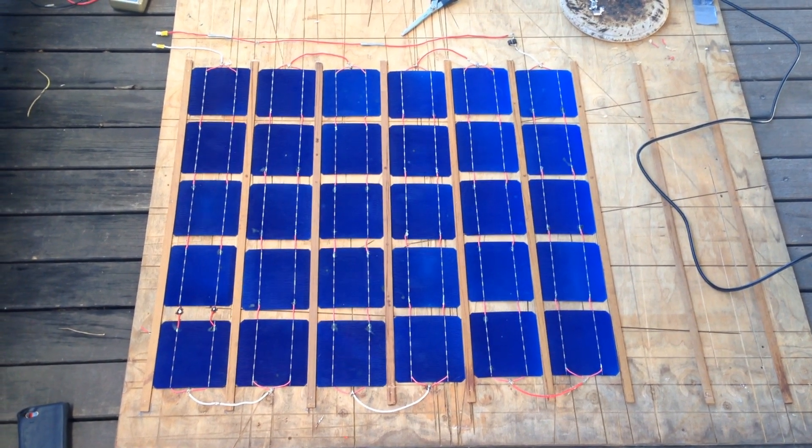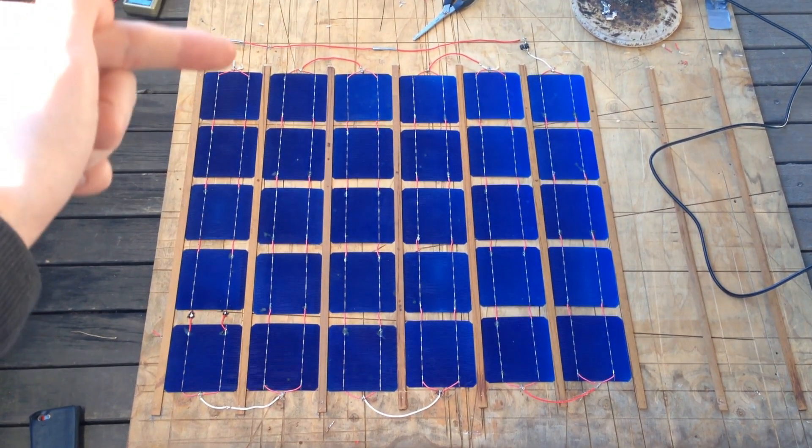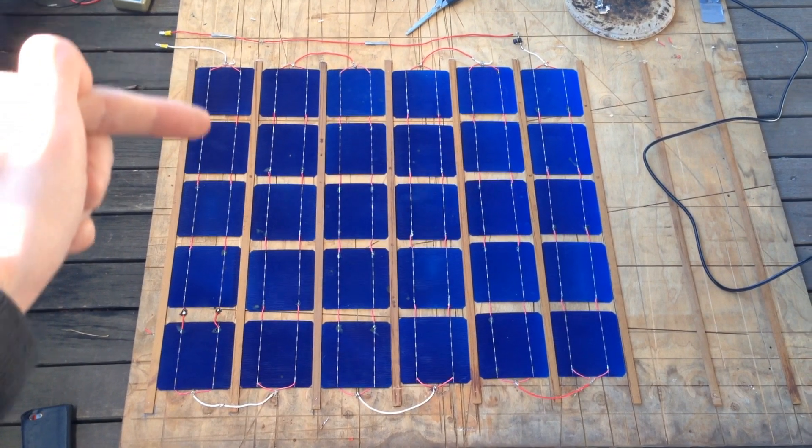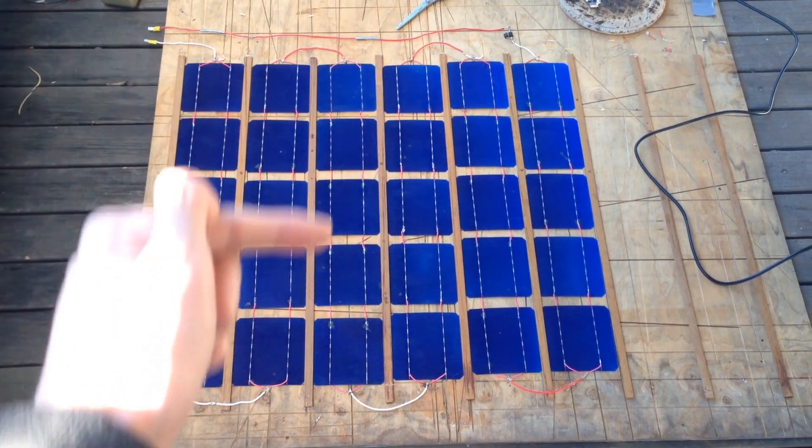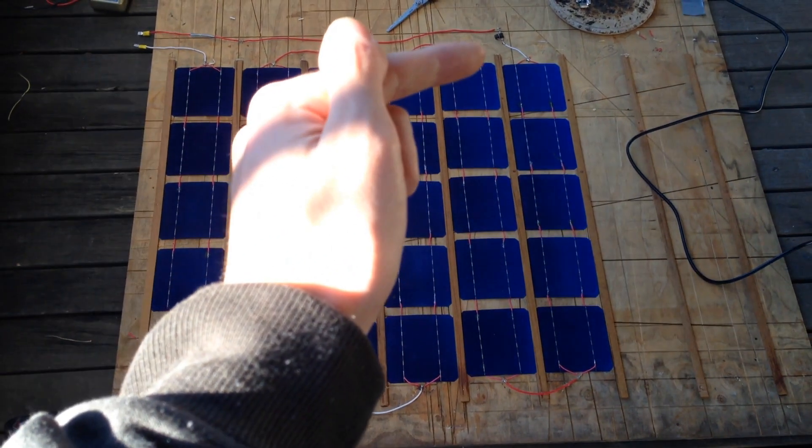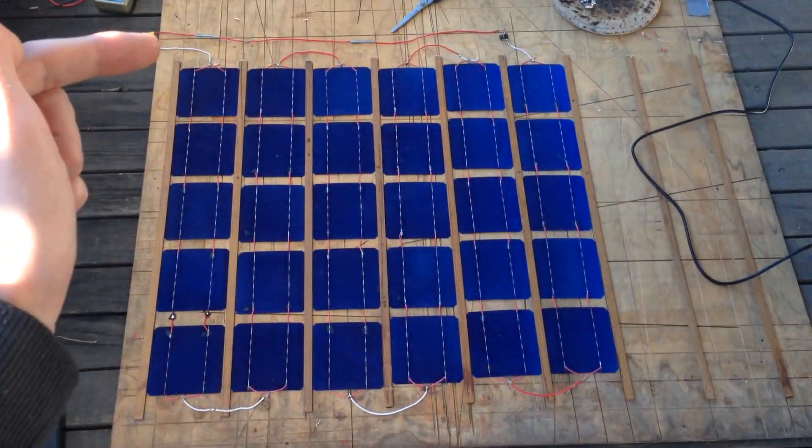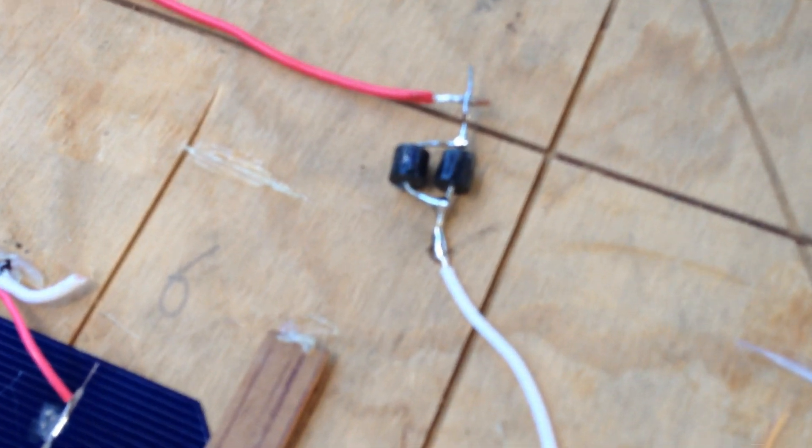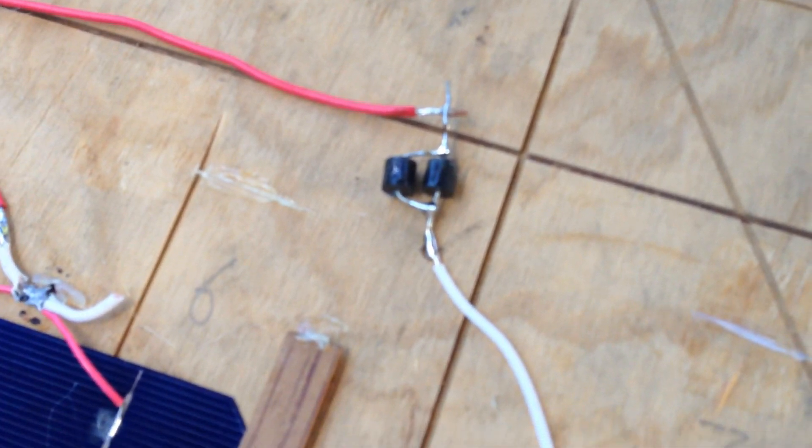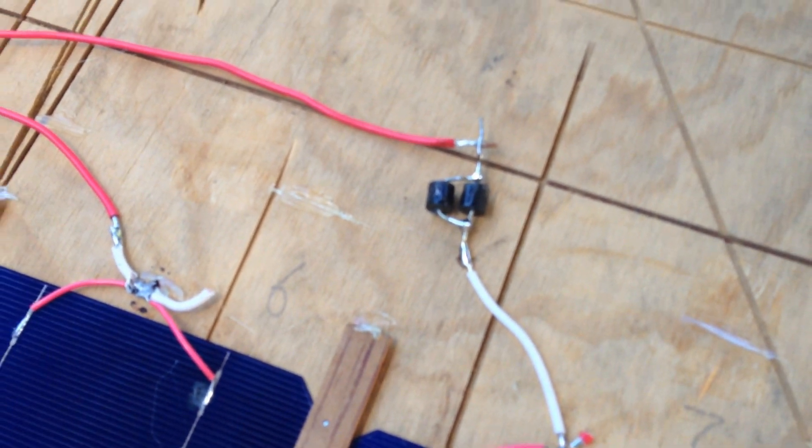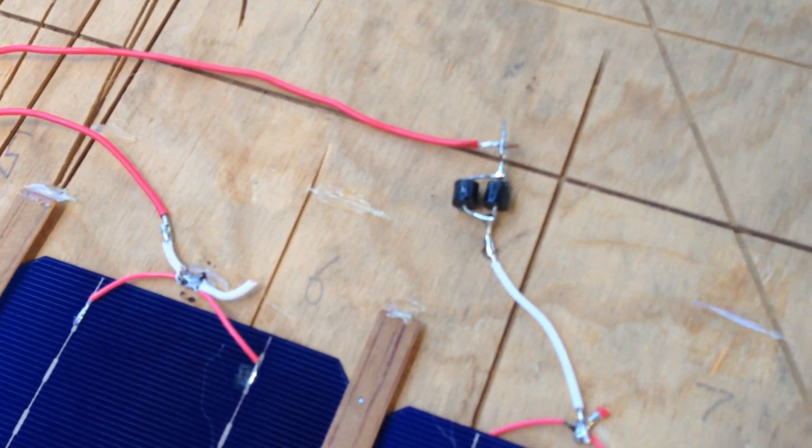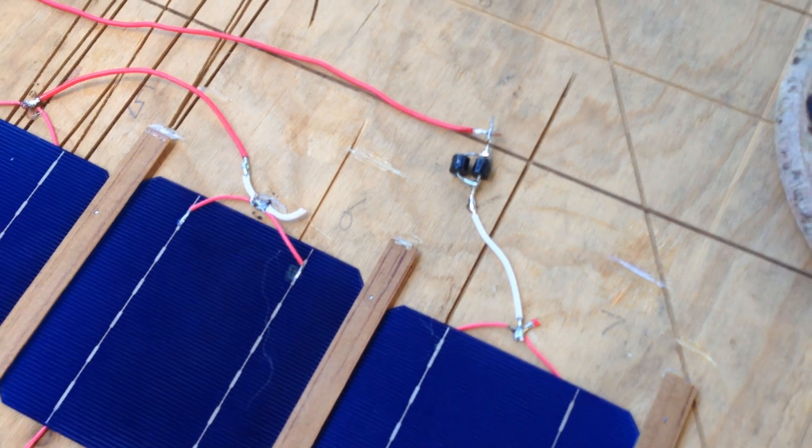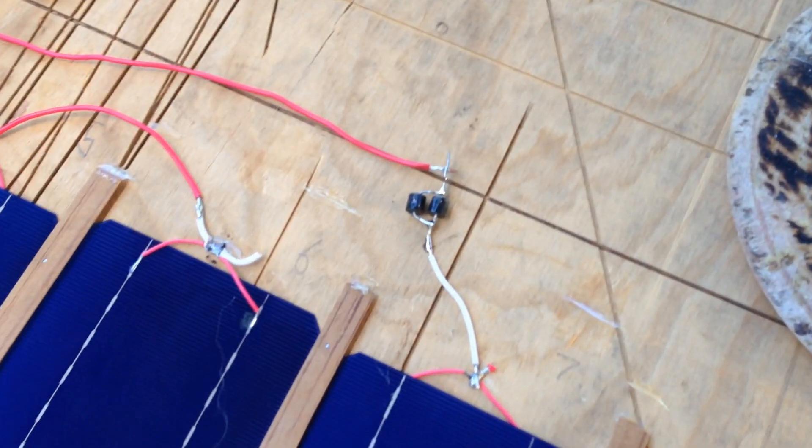That's all done. Got it all soldered up. Negative line here comes in, we've got all these cells in series and then all the way up to here where we've got the positive line going out. What I've got on the positive line, I've got these two little diodes to stop any reverse current. So if I'm charging a battery or something, I don't want the battery to push current back through the solar cells when there's shade over them.